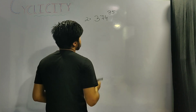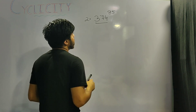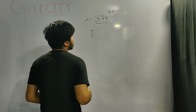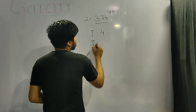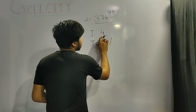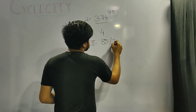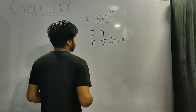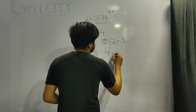Moving on to our second question: find the unit digit of 374 raised to the power 85. Following our 3 steps — step 1: the unit digit is 4. Step 2: find the remainder on dividing the power 85 by the cyclicity of 4, which is 2. Upon dividing, the remainder is 1. Step 3: the answer is 4 to the power 1, which is 4.